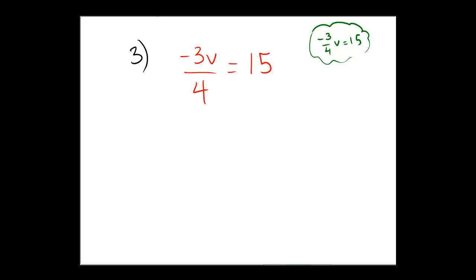So, first, with the 4 in the denominator, viewing that as division, I will multiply both sides by 4 for the purpose of cancelling out the 4. So, on the left, I'm left with negative 3v, and on the right, 15 times 4 is 60.